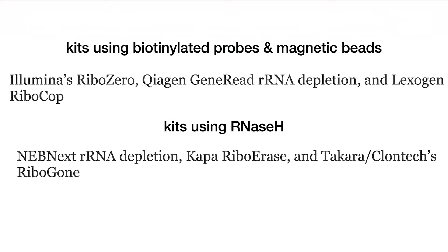Other kits use the RNase H strategy — you make DNA:RNA hybrids using those oligos, and then RNase H selectively cuts the RNA in those hybrids. Kits using this approach include NEBNext rRNA Depletion Kit, Kapa RiboErase, and Takara ClonTech's RiboGone.